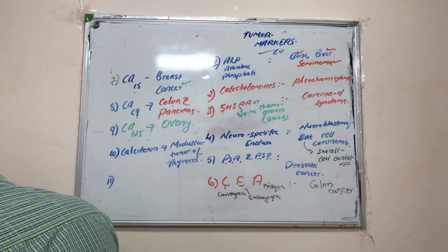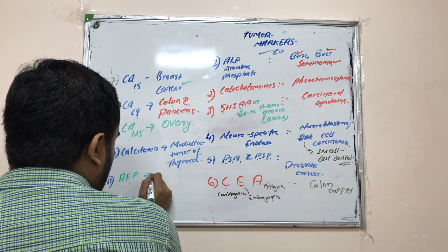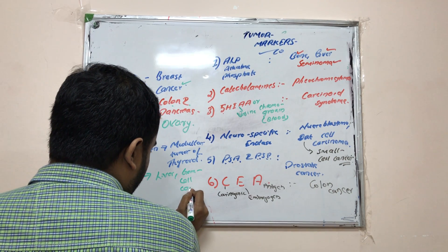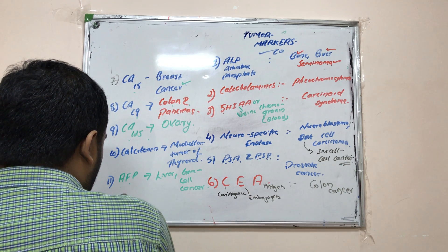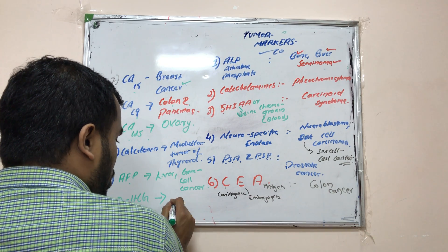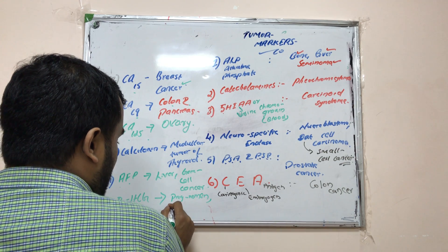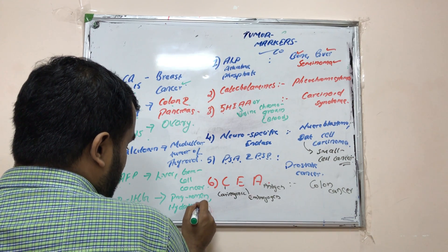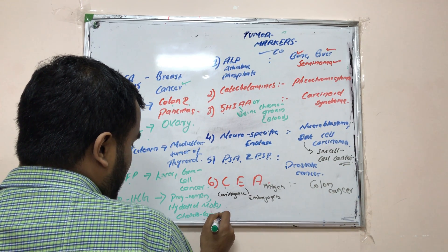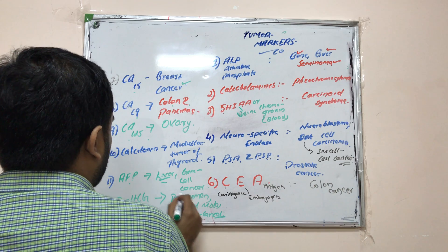Alpha-fetoprotein (AFP) is seen in liver cancer and also in germ cell cancer. Beta-HCG — beta human chorionic gonadotropin — is seen normally in pregnant women as a pregnancy test, as well as in hydatidiform mole in the uterus and in choriocarcinoma.